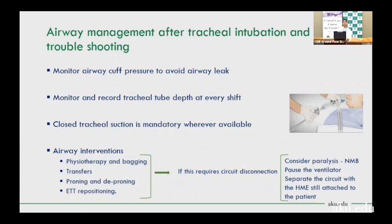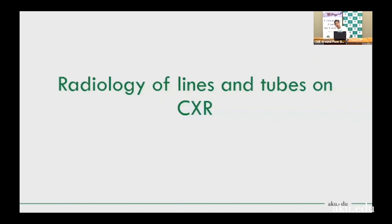For ongoing ventilated patient care, procedures requiring PPE include: physiotherapy bagging, transfer, proning, deproning, and endotracheal tube repositioning. If circuit disconnection is needed, you can paralyze the patient, separate the circuit at the HME filter attached to the catheter mount — so HME remains attached to the patient — then disconnect the circuit. These are the management principles for emergent and urgent intubation in COVID patients.